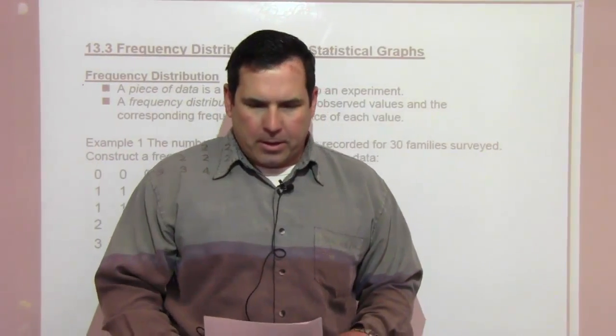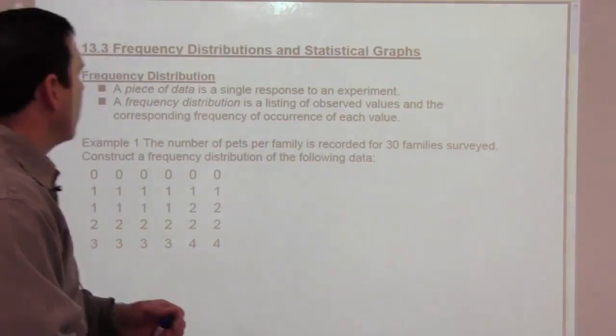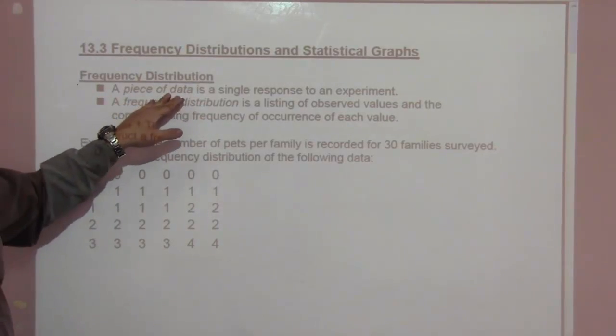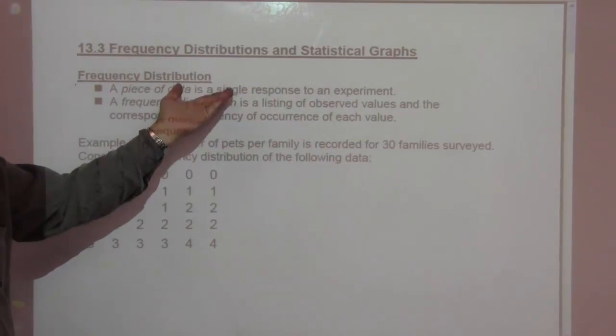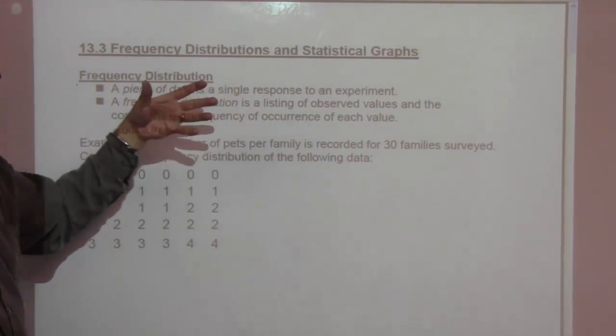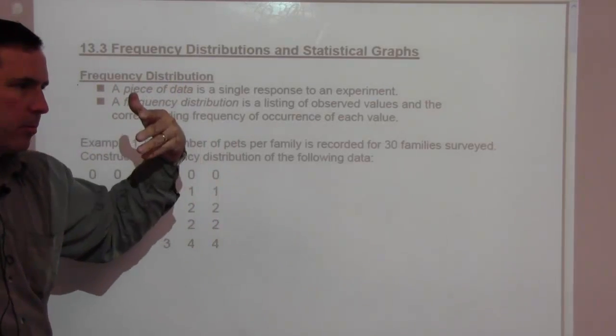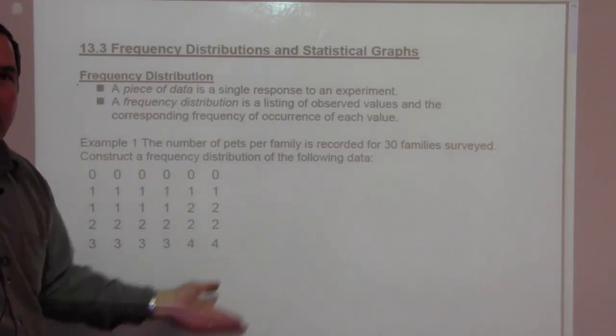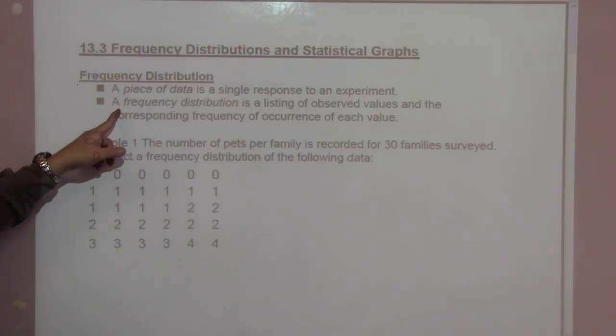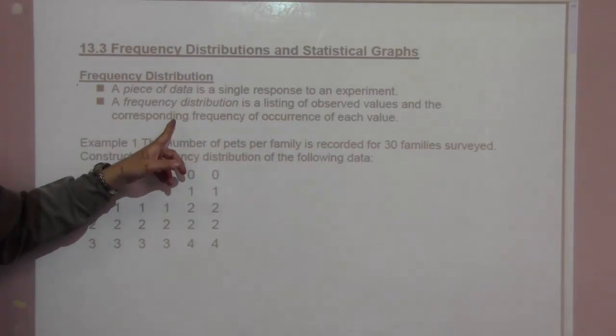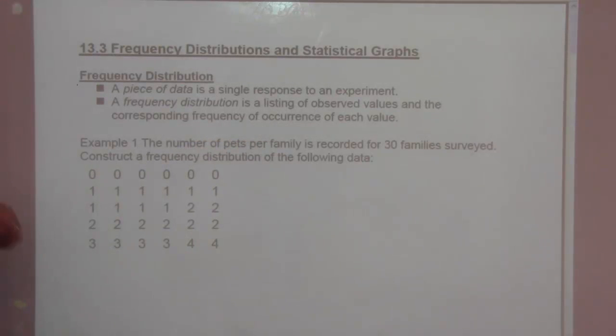Hello, welcome to 13.3 Frequency Distributions and Statistical Graphs. A piece of data is a single response to an experiment. It could be someone's response from a poll, or it could be how well a certain item held up to being smashed, being hit by a bat, like talking about a window or something. A Frequency Distribution is a listing of the observed values and the corresponding frequency of occurrence of each value.